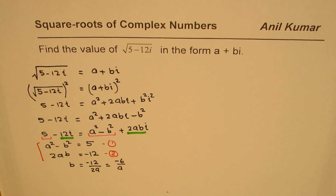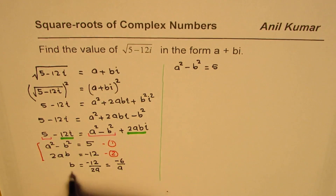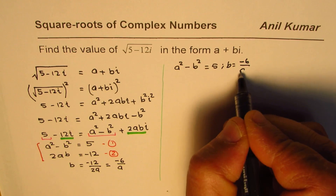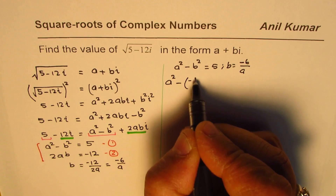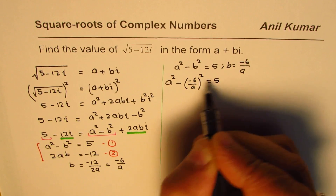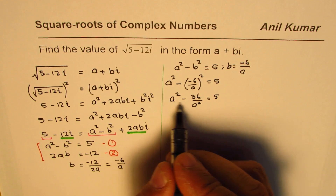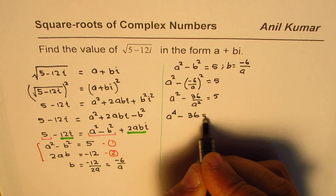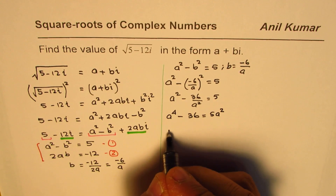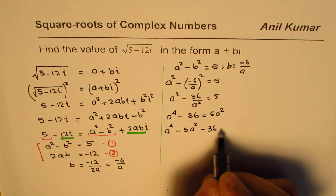Now let's substitute into equation 1. We have a squared minus b squared equals 5, and b equals minus 6 over a. Substituting gives a squared minus (minus 6 over a) squared equals 5, which is a squared minus 36 over a squared equals 5. Multiplying all terms by a squared gives a to the power 4 minus 5a squared minus 36 equals 0.